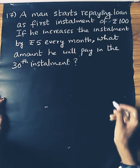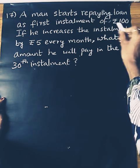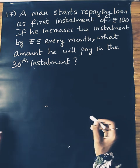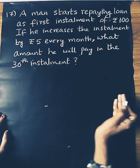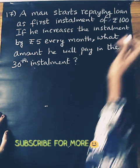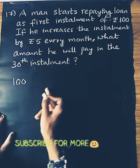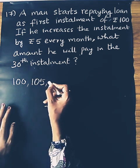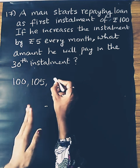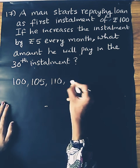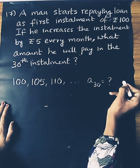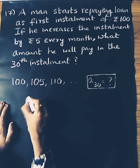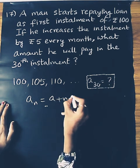Next question: A man starts repaying a loan with a first installment of Rs. 100 and increases each installment by Rs. 5 every month. What amount will he pay in the 30th installment? First installment is 100, second installment is 105, third installment is 110, and so on, increasing by 5 each time.